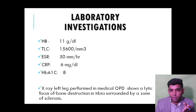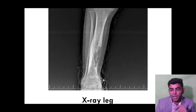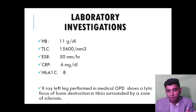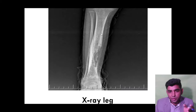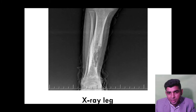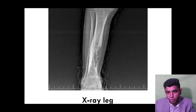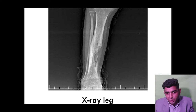An X-ray of the left leg was performed in medical OPD. On the X-ray we can identify the tibia, fibula, knee joint, and the foot area. There is necrosis present — bone dissolving, infection in the bone and bone marrow visible on the X-ray. This is the most important presentation.